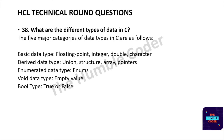The next question is: what are the different types of data in C? The five major categories are: basic data types (floating point, integer, double, character), derived data types (union, structure, array, pointers), enumerated data types (enums), void data types (empty/void value), and boolean data types (true or false).